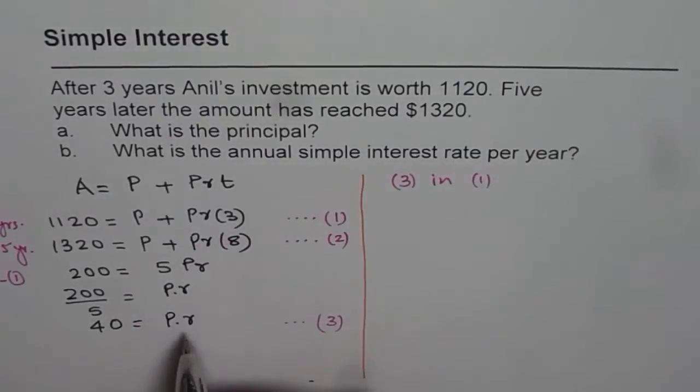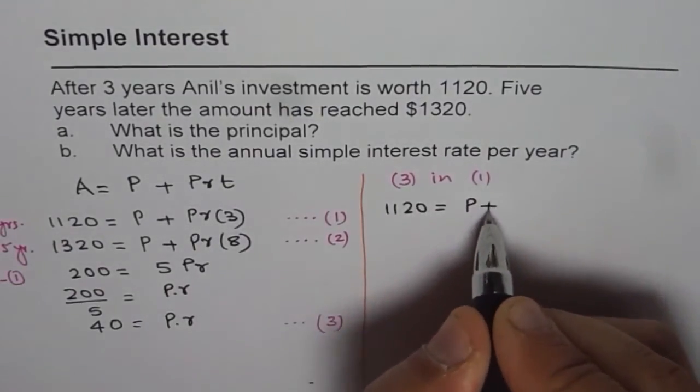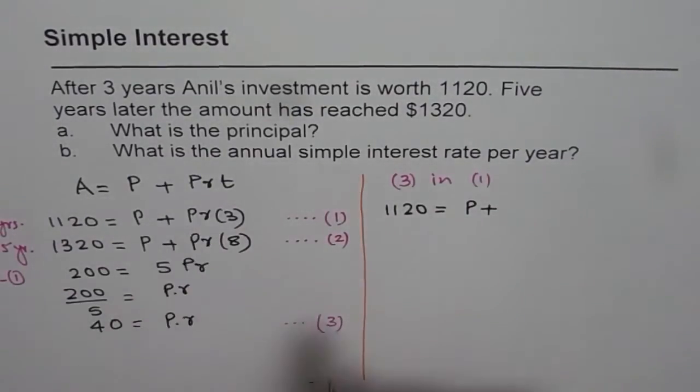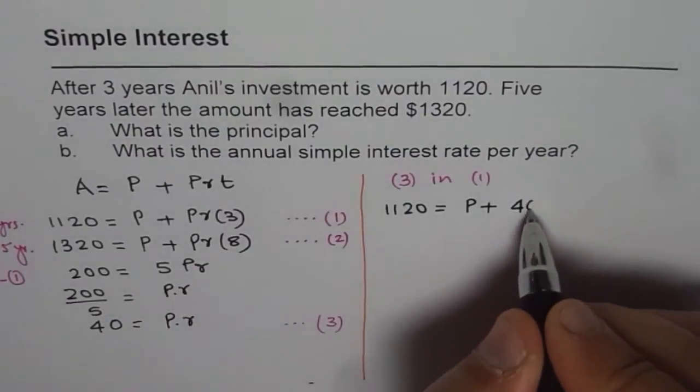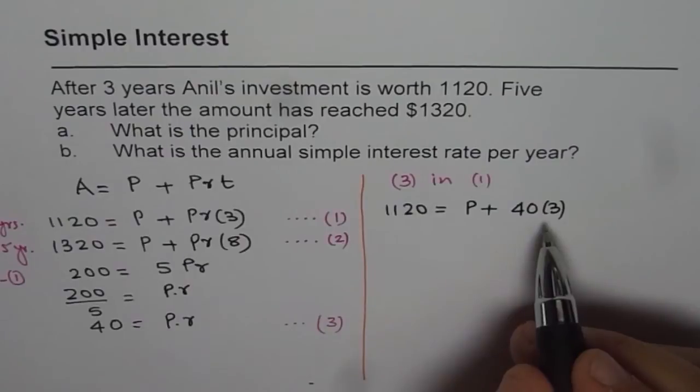So PR is 40 for me. So I will write 40 here. So we have 1120 = P + instead of PR, I am writing 40, 40 times three. Do you see that?